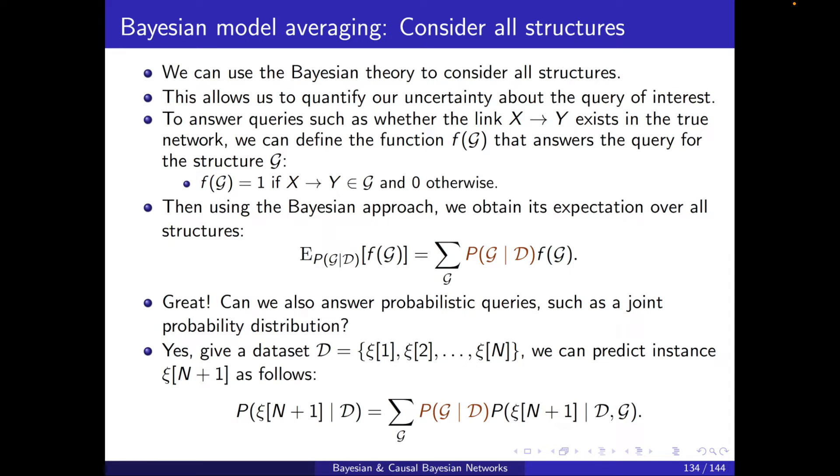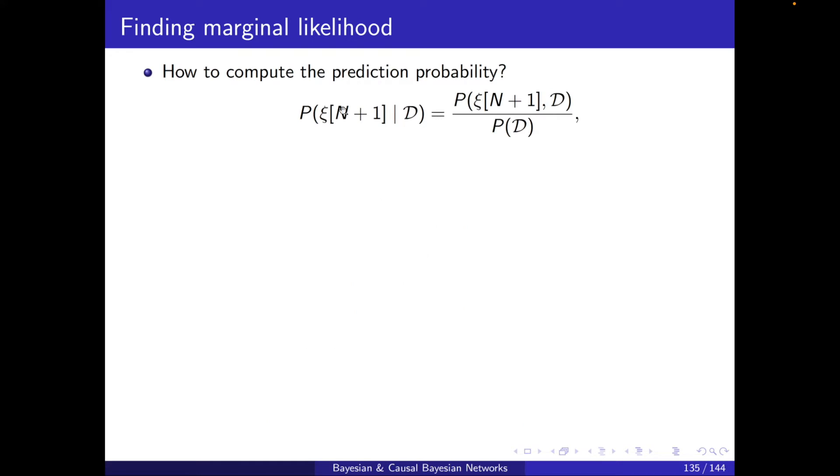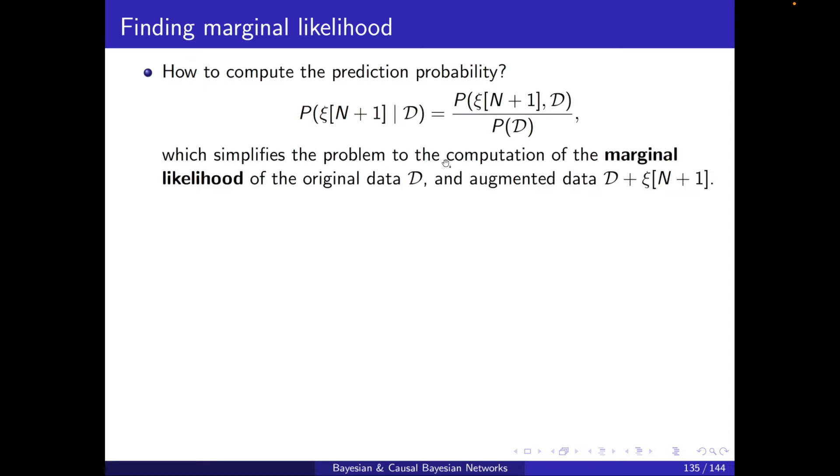How can we calculate this? One way is to write this probability of the new instance conditioned on D using the definition of a conditional probability. This is then the computation of the marginal likelihood of the original data P(D) and the augmented data P(D and the new instance). I can consider this as a new dataset D prime and this is D. So if I know how to do P(D), I can also calculate this one. So the denominator is computed similarly.